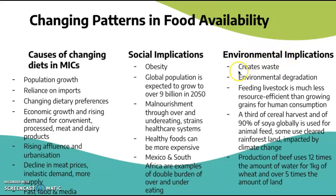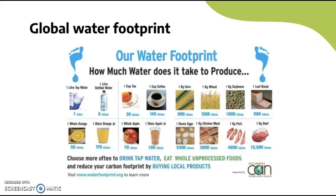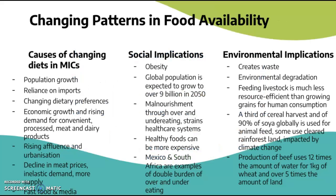Environmental implications: it can create waste because of more consumption, more probability of waste from food and from packaging of processed foods. Environmental degradation — feeding livestock is much less resource efficient than growing grains for human consumption, which brings us back to embedded water. Food, water, and energy are all linked, which is really important. A third of cereal harvest and 90% of soya globally is used for animal feed, some using cleared rainforest land impacted by climate change.